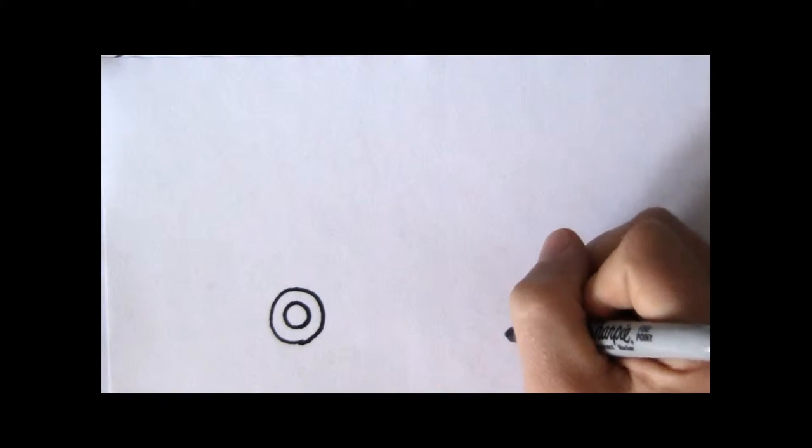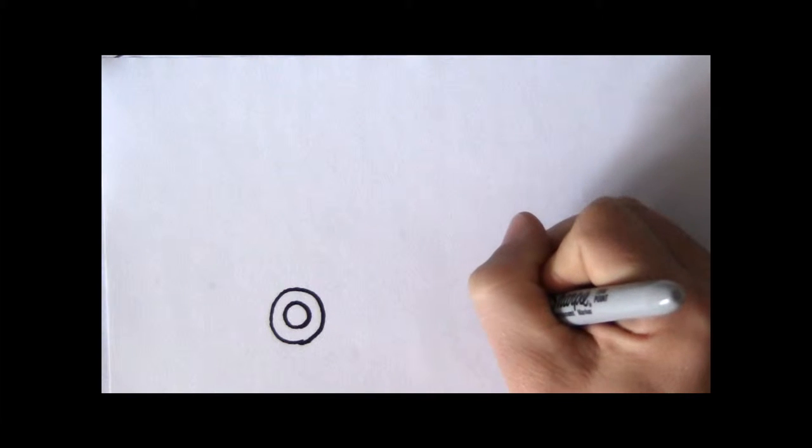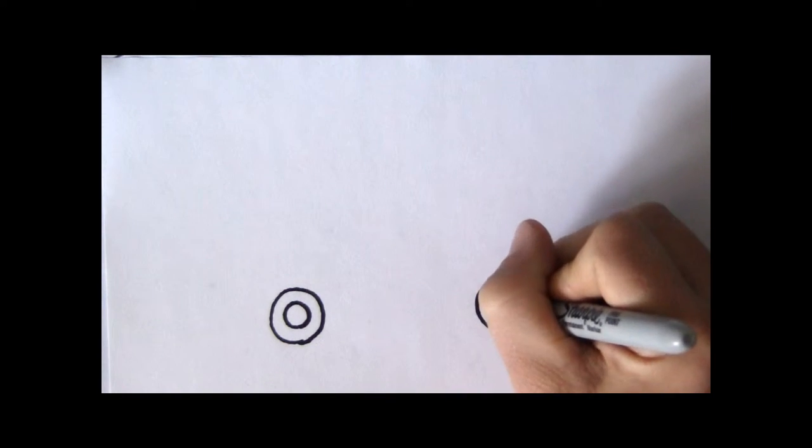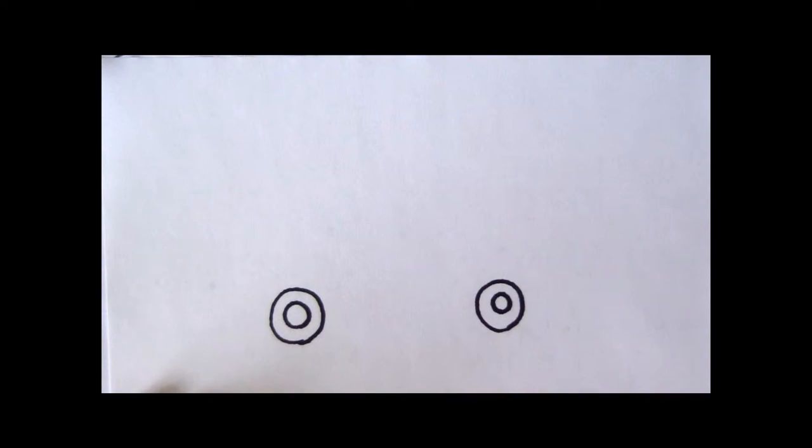We're going to draw the side of the vehicle so we'll only be able to see two of the wheels. So let's draw the second wheel. It's a circle with another circle inside.